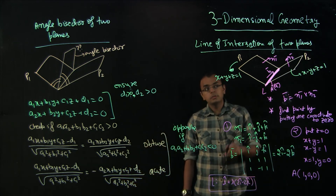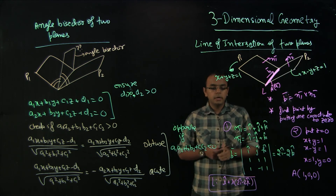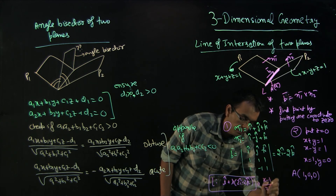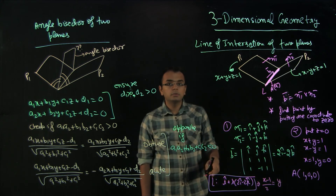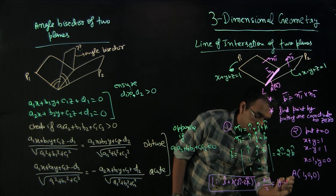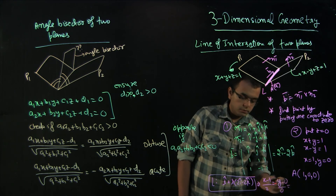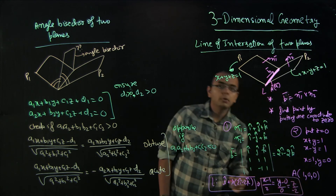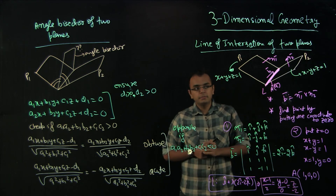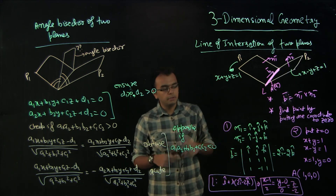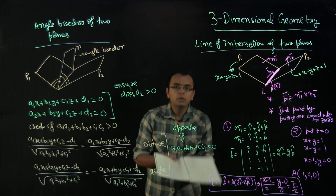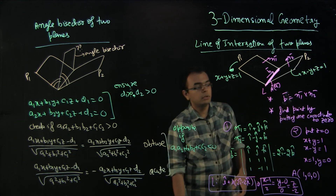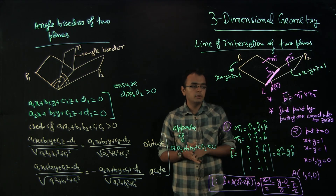This line lies in both plane 1 and plane 2. In coordinate form, it can be written as (x − 1)/2 = y/0 = z/(−2), meaning y = 0. To summarize: the line of intersection is common to both planes, its direction vector is N1 × N2, and you find a point on it by setting one coordinate to 0 and solving the resulting system.